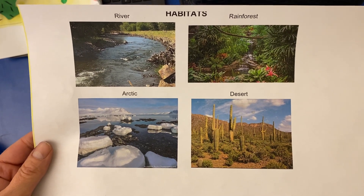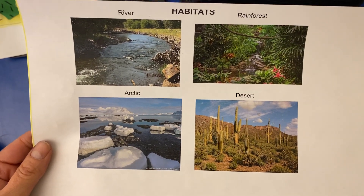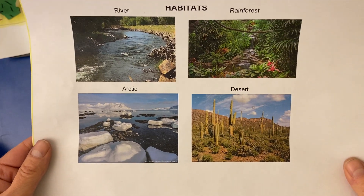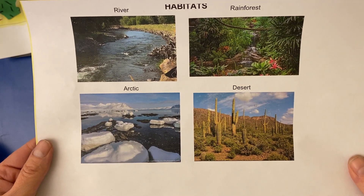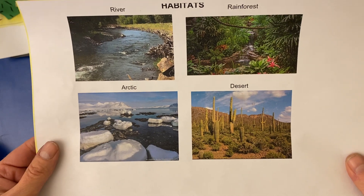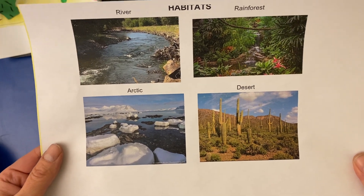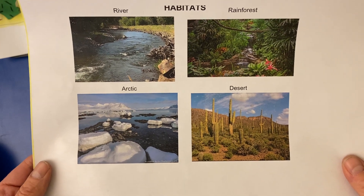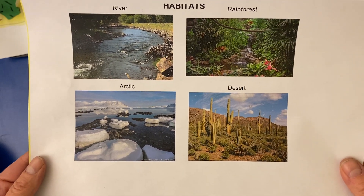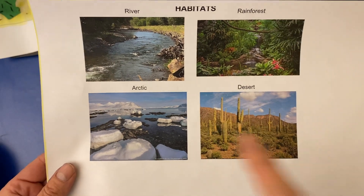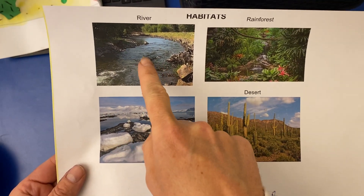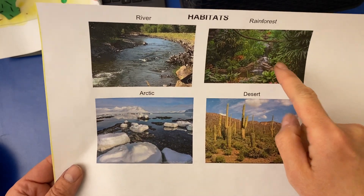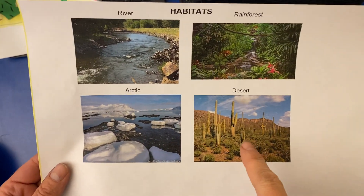Hello kindergarten artists! Today you are going to be making artwork of a habitat, a place where an animal lives. In your classroom you had the chance to learn about four different types of habitats and you picked one to do for this really fun art project. You might have chosen between the river or fresh water or pond, the rainforest, the arctic, or the desert.